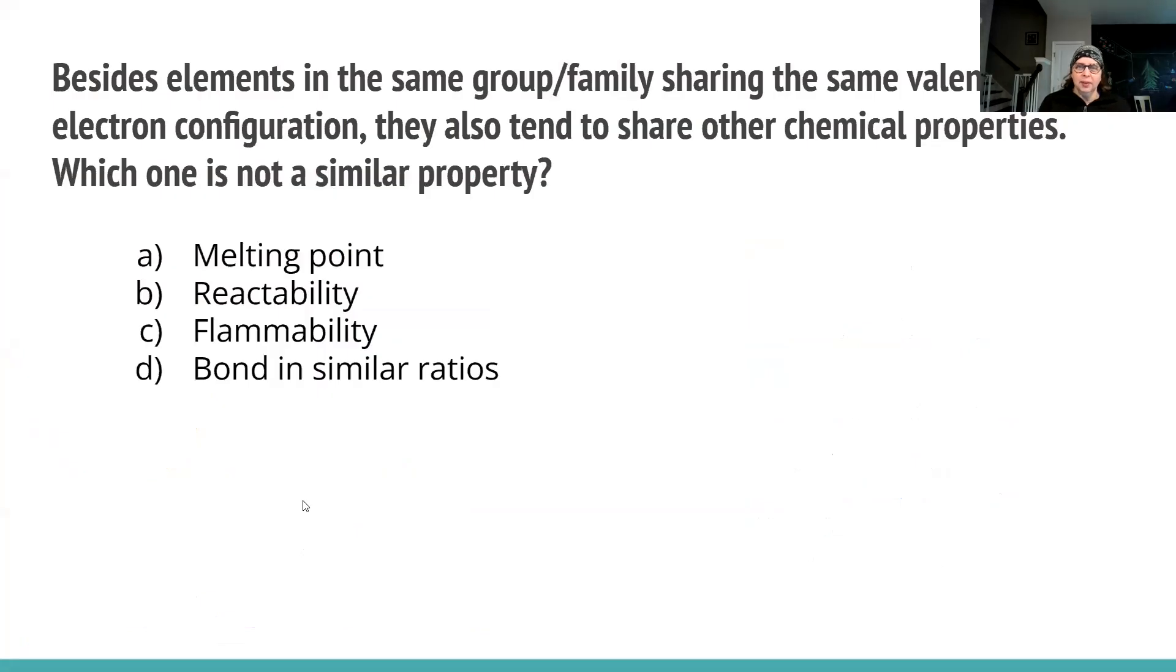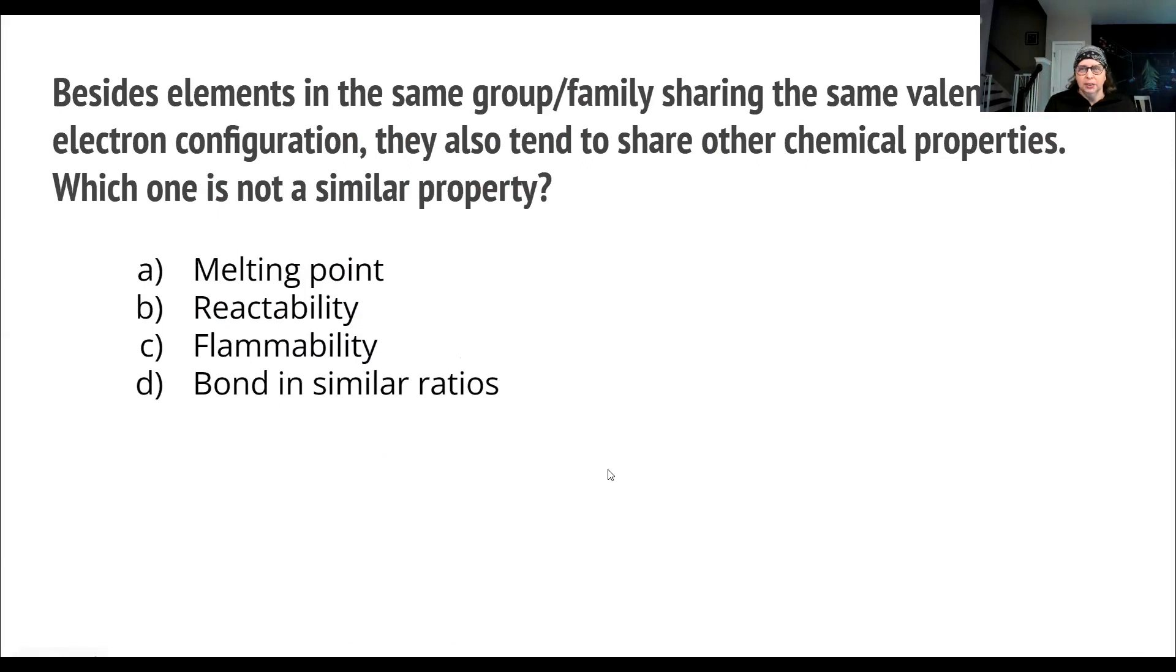Besides elements in the same group and family sharing that same valence electron configuration, they also tend to share other chemical properties. So here's one of the questions you could see on the test. There's some critical words here, chemical properties. So you got to remember which thing is which. Melting point, that is changing phases, so that is a physical property. Reactability is ability to bond with others, that would be a chemical property. Flammability, chemical property, ability for it to burn, that is a chemical reaction, you got a combustion reaction. Bonding in similar ratios, everybody in that group and family shares similar properties and bonding is a chemical property.